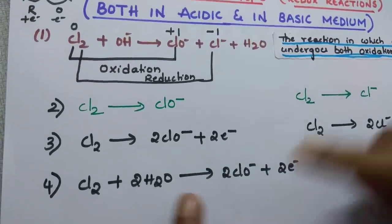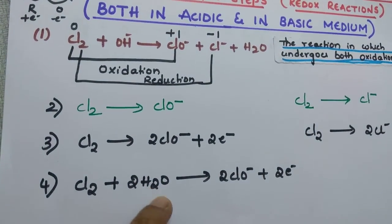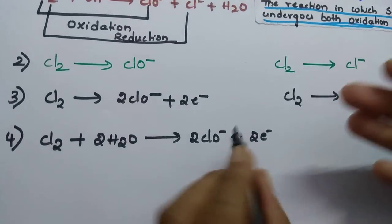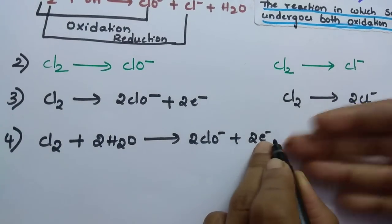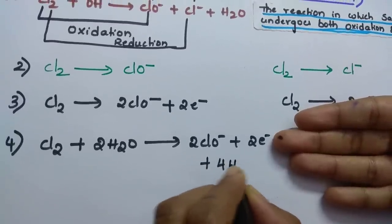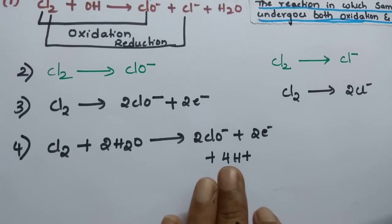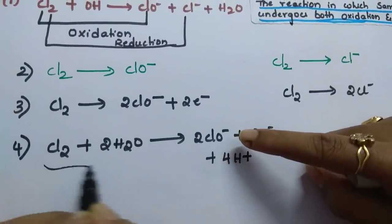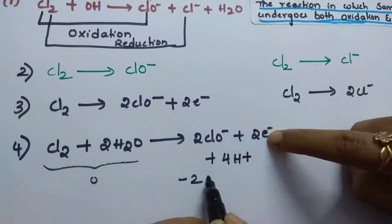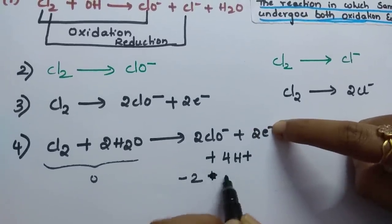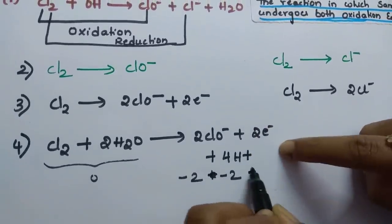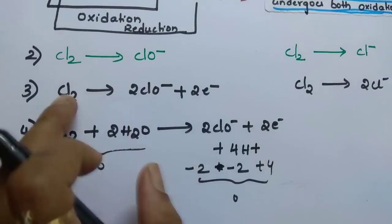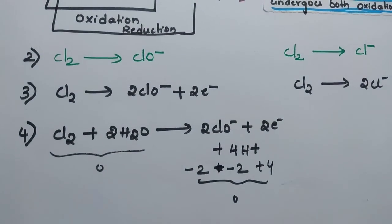Now oxygen is balanced. Balance hydrogens: 2 H₂O gives 4 hydrogens, so put 4H⁺ on the right-hand side. To verify charge balance: left side has zero charge, right side has minus 2 (from 2 electrons) plus minus 2 (from 2 ClO⁻) plus plus 4 (from 4H⁺) = zero. Charge is balanced. Balancing in the form of electrons makes this very easy.